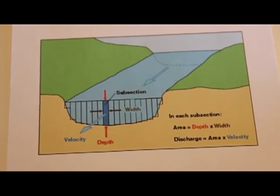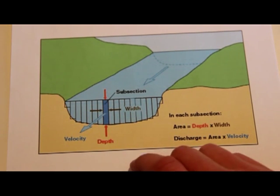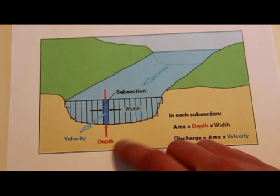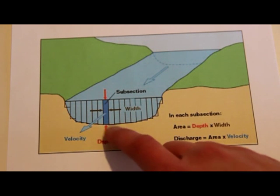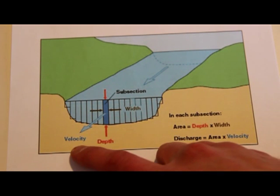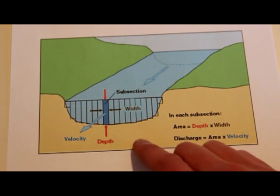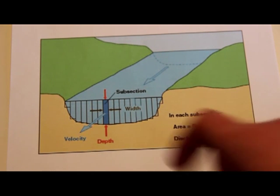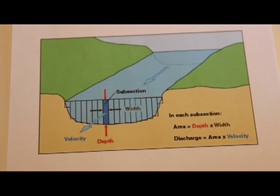A flow tracker works by dividing the river into subsections. For each subsection, you get the width, the depth, and it calculates the velocity. At the end it adds up all the subsections to give you your total discharge.